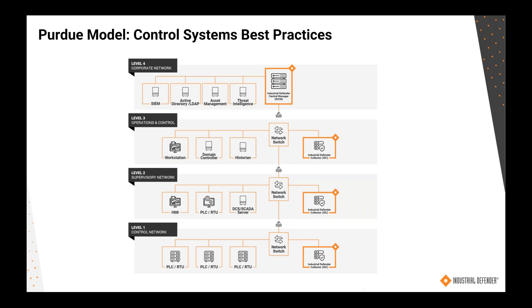In recent years, the increase in wireless technologies plus new smart devices is really bending the Purdue model quite a bit. You have situations now where smart devices might live in level one or even below, and they may perform their function well within the bounds of the traditional Purdue model. But at the same time, they may send diagnostic information about themselves directly to a level four system or even a cloud system — for predictive maintenance, for example.